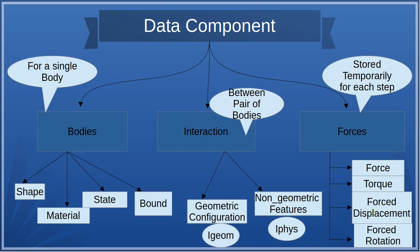As far as the data component is considered, it can be divided into three parts: bodies, interaction, and forces. Bodies refers to a single body object. You can give a body a shape, a material, a state (position), and a bond for two-body interaction.